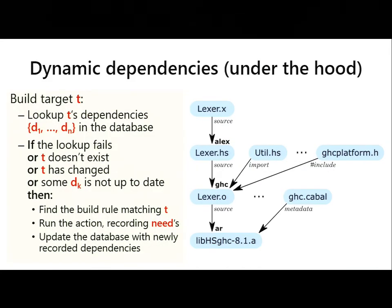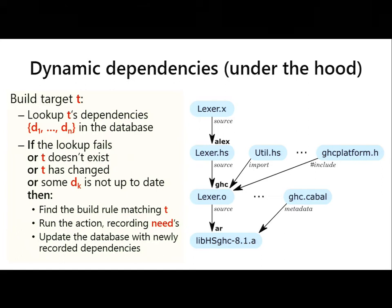Here's an example subgraph of the GHC dependency graph. The lexer.hs file is built by Alex from some source; it imports Haskell files like util.hs and hash-includes header files like GCC program and GCC platform. These are all dependencies of the lexer object. Then the lexer object ends up in an archive — a library of objects. To find what goes into this library, you need to parse the GHC.cabal file, which contains package metadata. This is the second layer of dynamic dependencies. In make, you must arrange the build system into three build phases to handle these two layers, restarting and generating new makefiles between each phase.